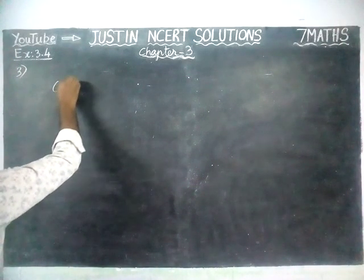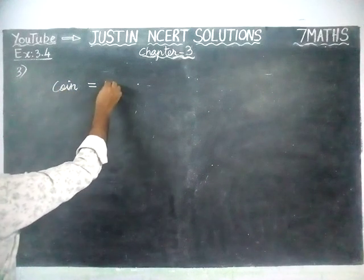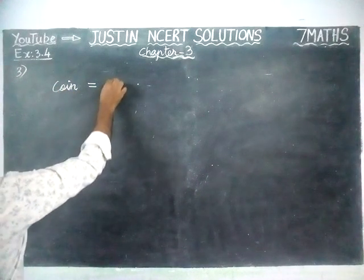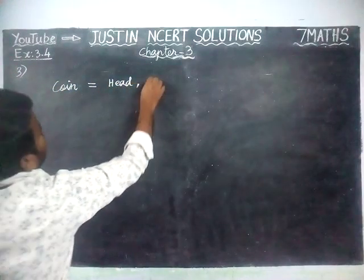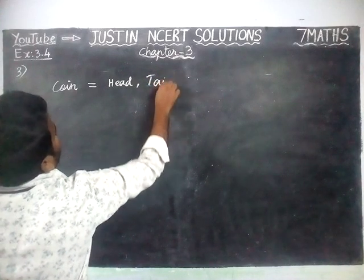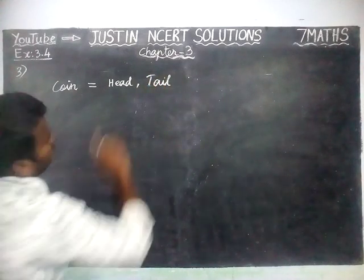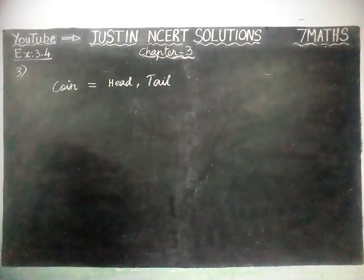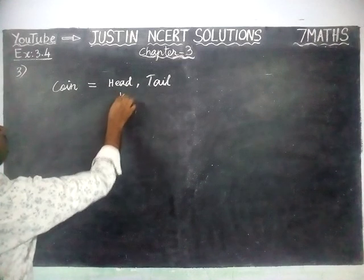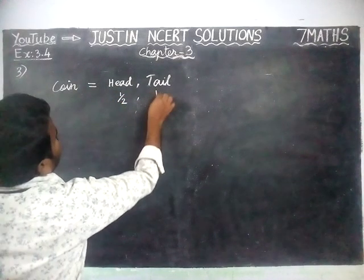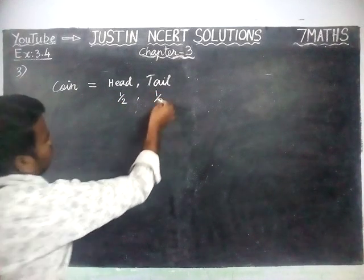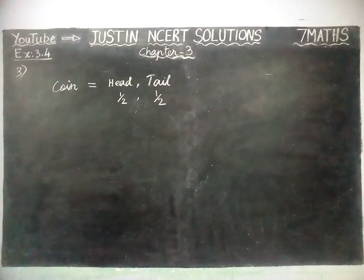When we are tossing a coin, the possible outcomes are head and tail — only 2 possibilities. To get head is 1 by 2, and to get tail is 1 by 2. So there is a 50% possibility.